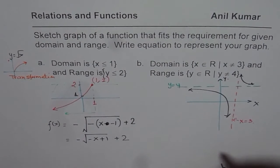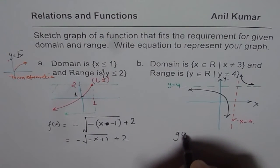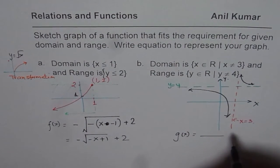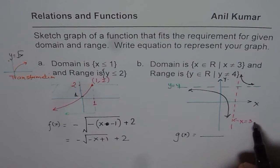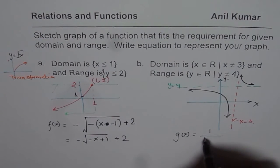Now, how to write the equation? We can write the equation as, let us say, g of x equals to. Since there is a translation of 3 units to the right in the reciprocal function, we can write this as x minus 3.